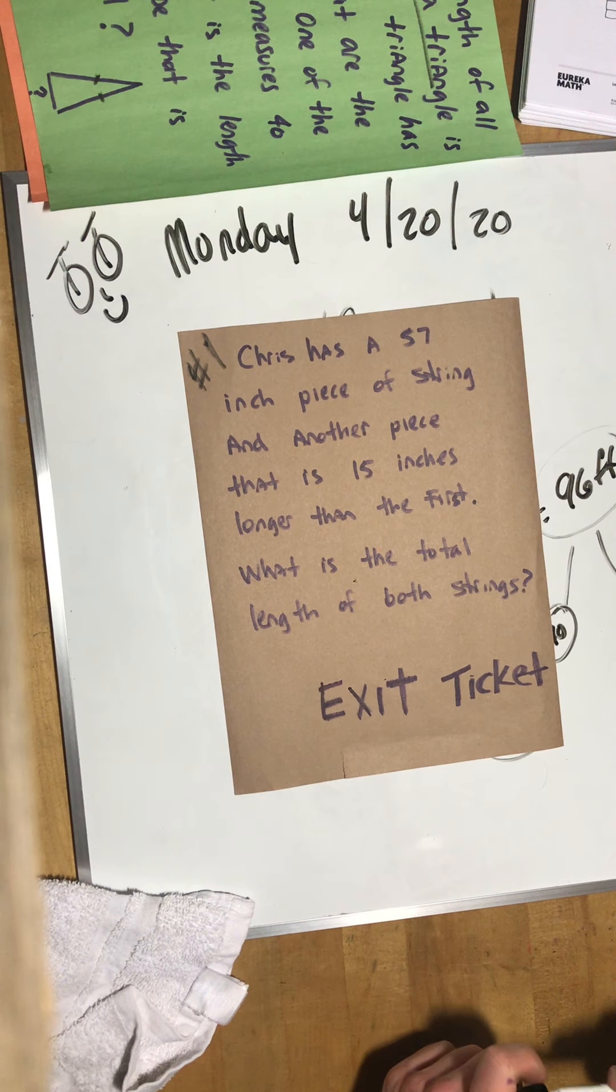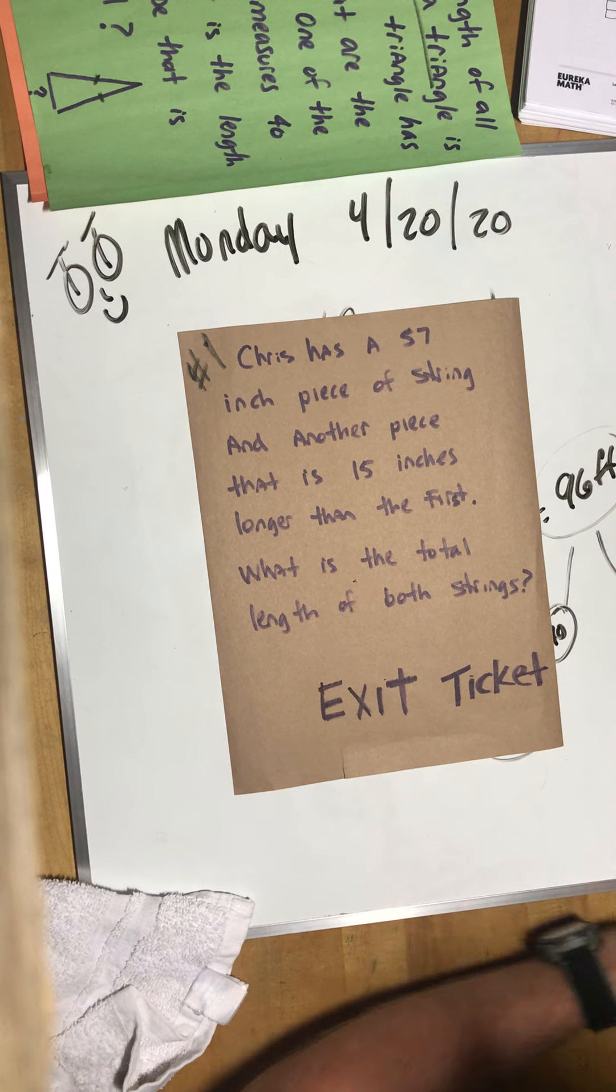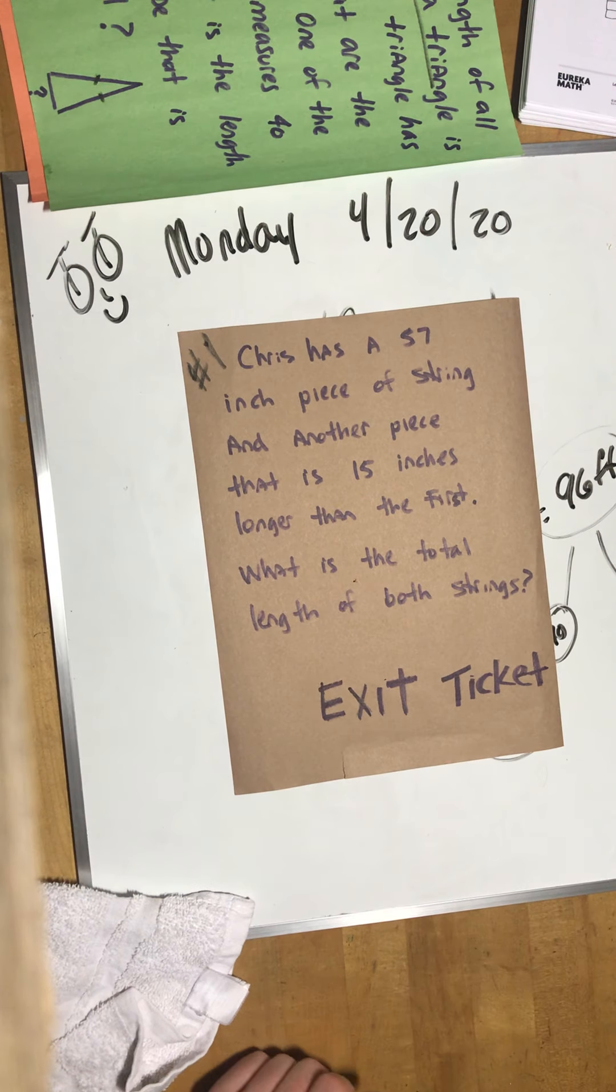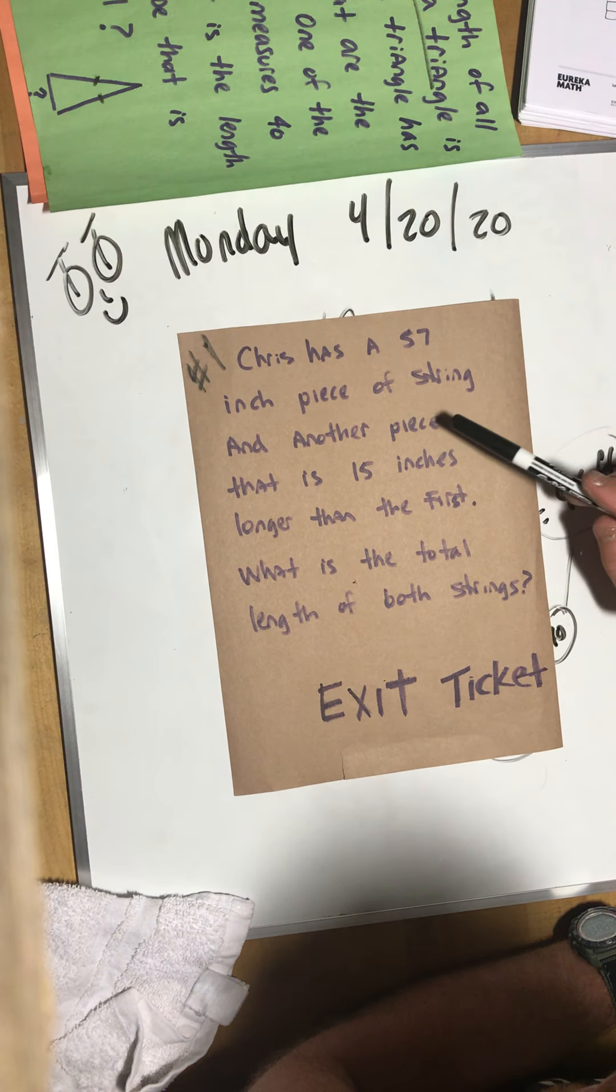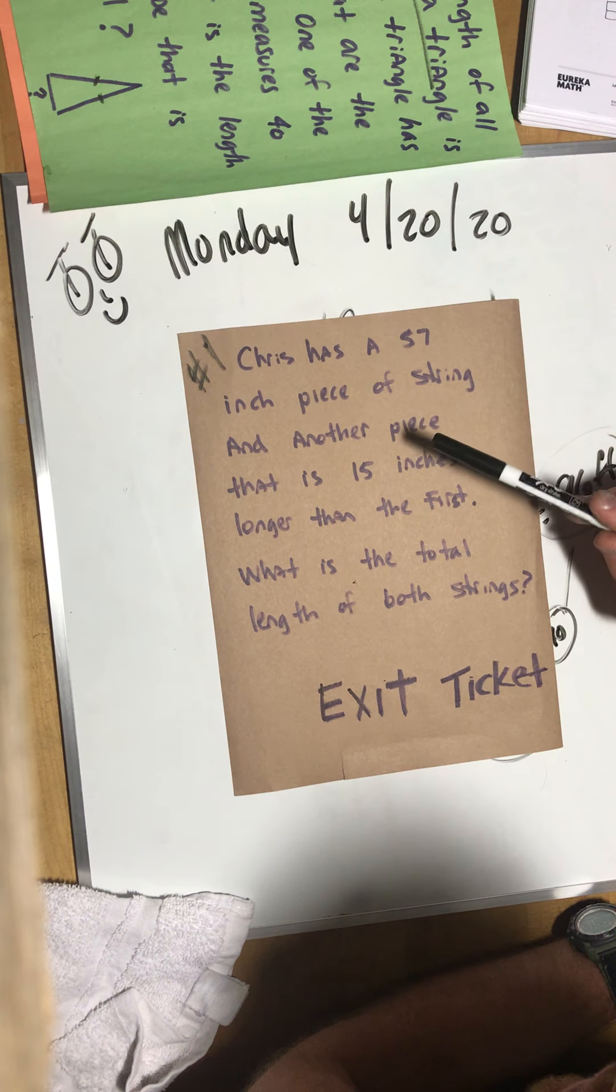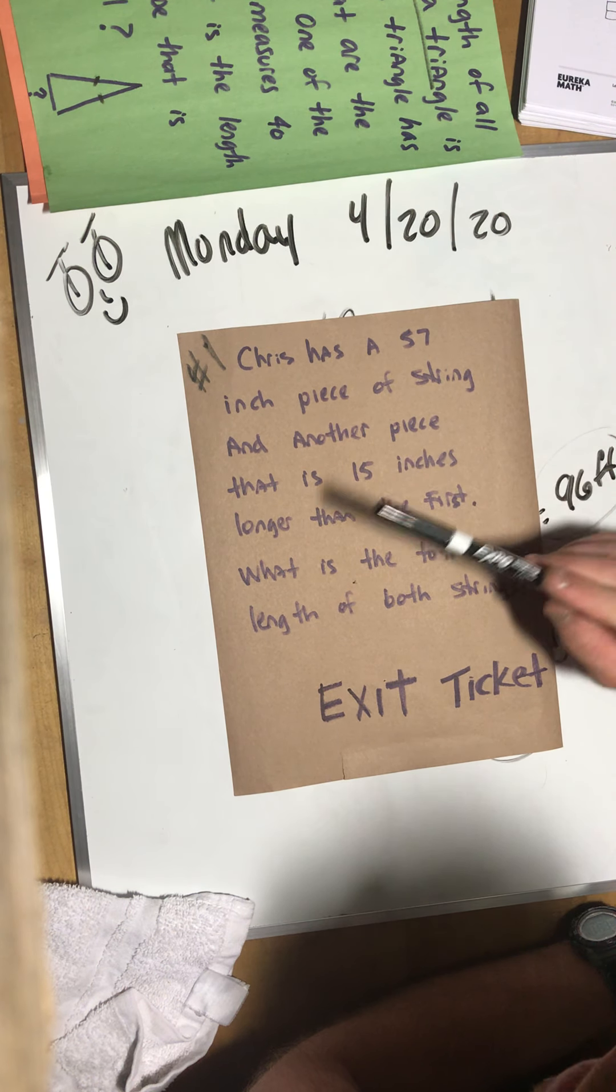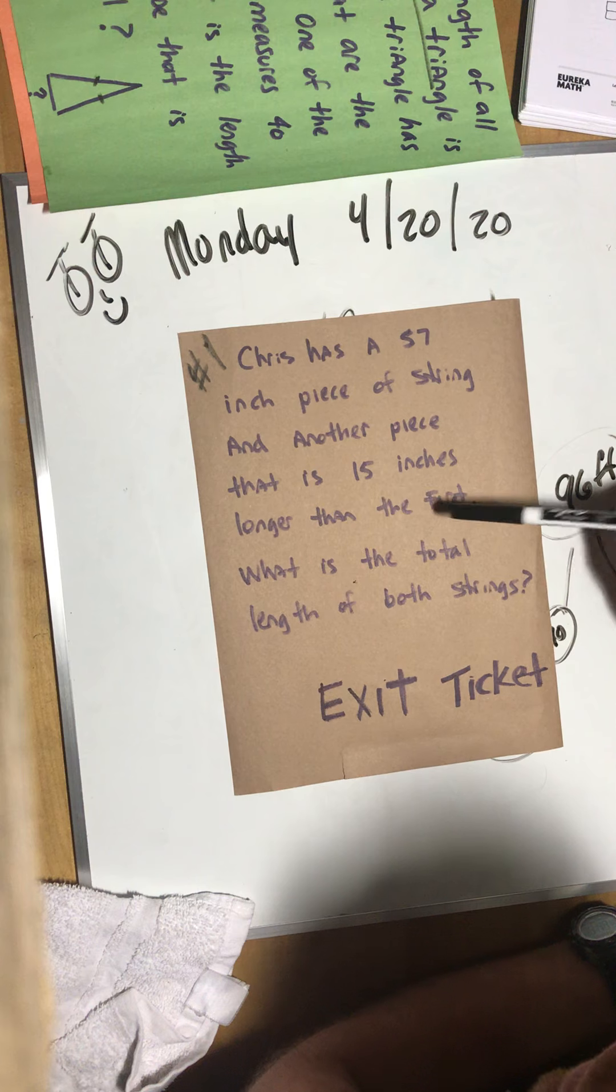All right, here's the question for the exit ticket. Might say number one when you get to the exit ticket on Google Classroom and I'll read it to you and I'll help you lay it out and then I'm going to stop the video. Chris has a 57 inch piece of string and another piece that is 15 inches longer than the first. What is the total length of both strings?